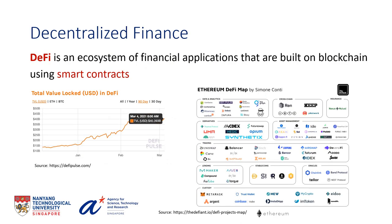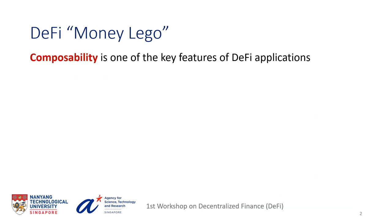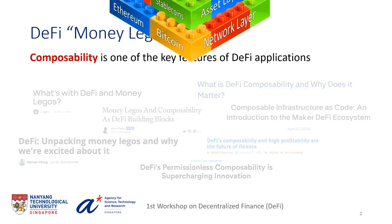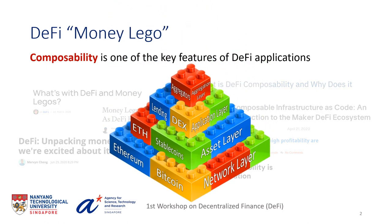Decentralized finance, or DeFi, is an ecosystem of financial applications that are built on blockchain using smart contracts, which are programs that run on blockchain. DeFi applications implement decentralized versions of a variety of traditional financial applications. They enable, for example, trading between cryptocurrencies or lending them. Currently, there are 40 billion dollars stored in DeFi applications. One of the most appealing and widely discussed features of DeFi is its composability — the components of the DeFi ecosystem are compared with pieces of money Lego that can be composed together to create new interesting use cases.